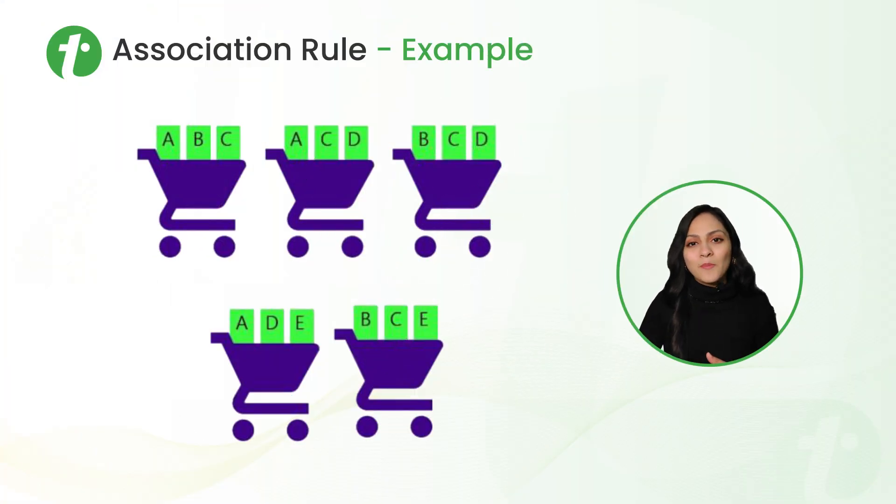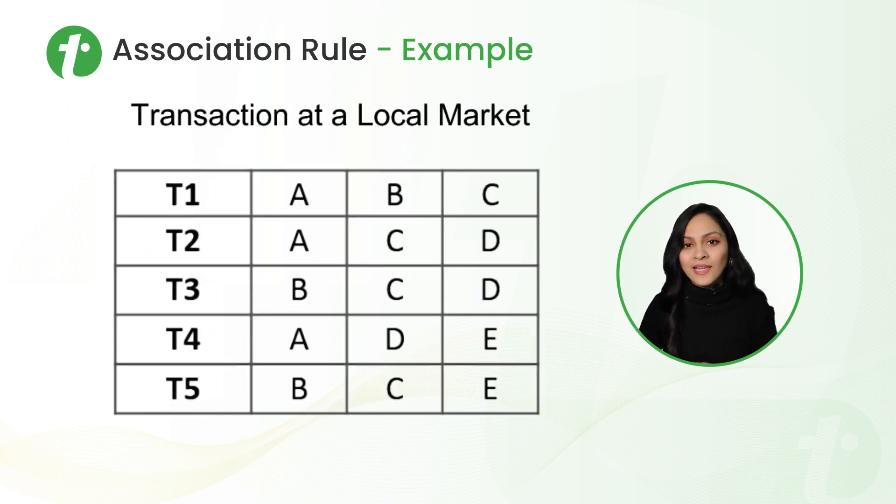Now let's look at an example. We have set of items here A, B, C, D and E and set of transactions T1, T2, T3, T4 and T5. In transaction T1, we have A, B and C. In transaction T2, we have A, C and D. In transaction T3, we have B, C, D. In transaction T4, we have A, D and E. And in transaction T5, we have B, C and E.